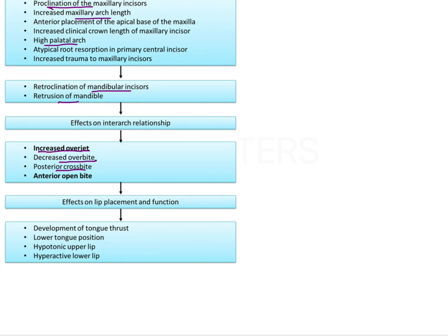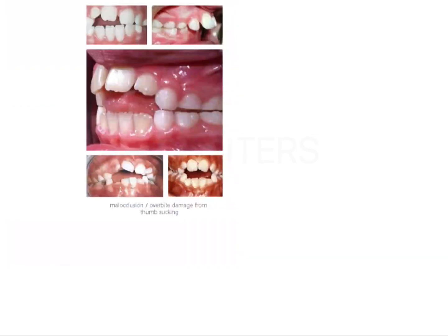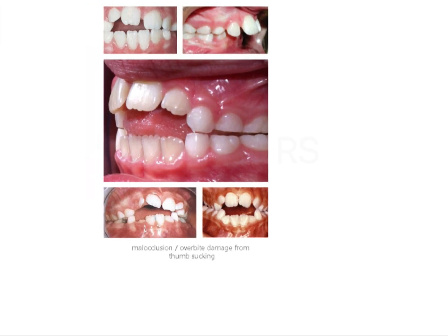Effects on the soft tissue include tongue thrusting habit, lower tongue position, hypotonic upper lip, and hypertonic lower lip. There will be an anterior open bite, causing the tongue to thrust between the teeth to achieve an oral seal. The narrow maxillary arch will lead to the formation of a posterior crossbite. These are all damaging effects seen because of the thumb sucking habit.